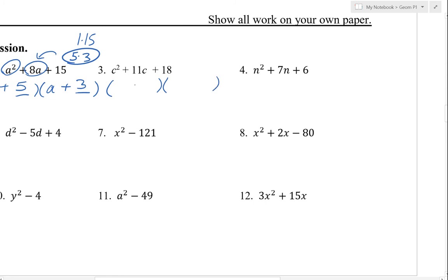c squared plus 11c plus 18, so again we need c times c in the first position. In the second position, we want to multiply to 18, and we're going to choose 2 and 9 because 2 plus 9 gives us 11.